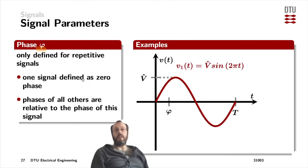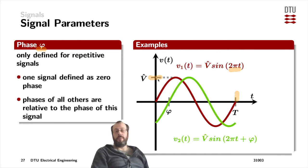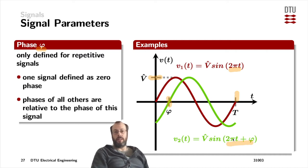Let's have a look at an example. We've got a sine wave here — it could also be a square wave or anything else, as long as it's repetitive. Here we've got a sine wave which is starting at zero, so it has no phase offset at all, and the argument of the sine wave is only 2 times pi times the time. We've got a period T down here, and an amplitude V-hat. Then if we plot another sine wave on top, this one has a phase offset of phi, showing up in the mathematical description with a plus phi, because it's delayed to the right-hand side of the origin. If it were on the other side, it would be a minus phi.